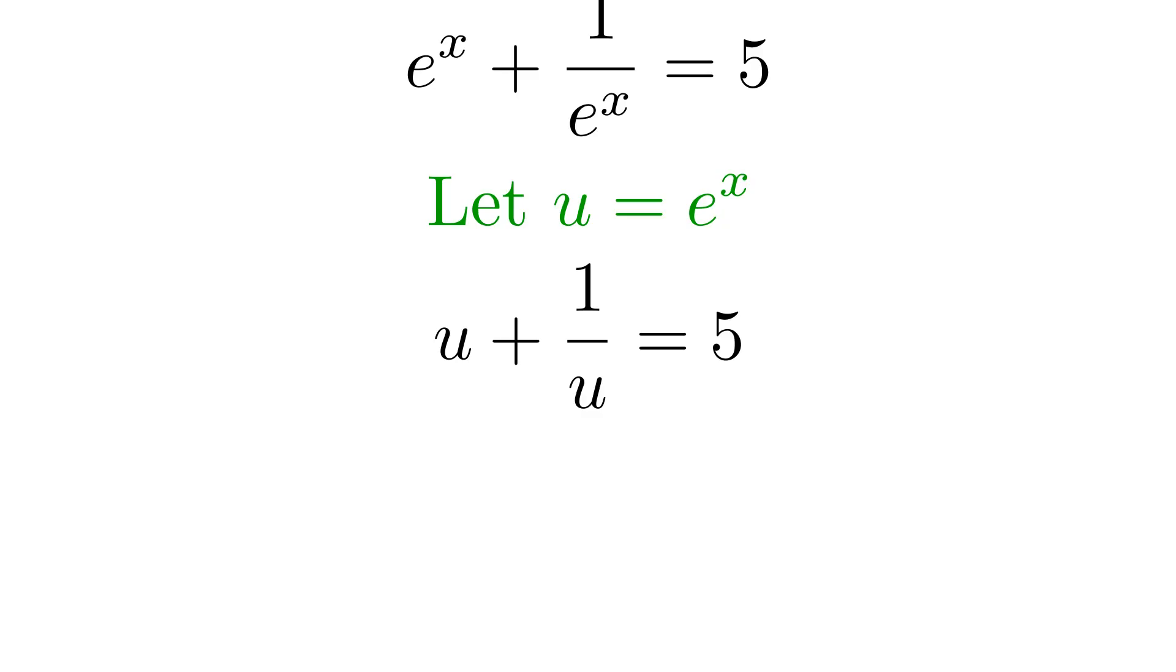u plus 1 over u equals 5. Now this might not look like a quadratic yet, but we're just one step away from revealing what this equation really is at its core. The fraction is making things a bit messy, so let's clear it out by multiplying everything by u. When we multiply everything by u, we get u squared plus 1 equals 5u. To put this in standard quadratic form, we need to gather all terms on one side. Moving 5u to the left side gives us a beautiful quadratic: u squared minus 5u plus 1 equals 0.